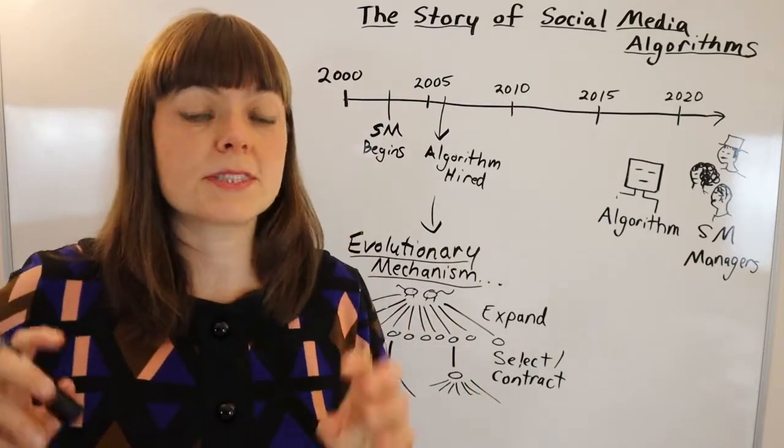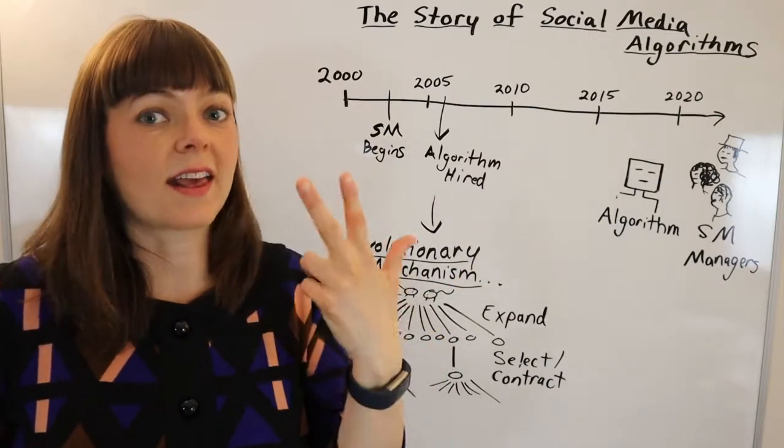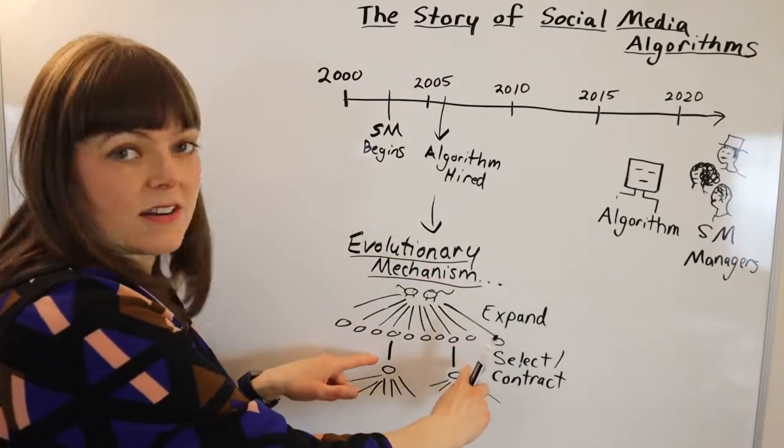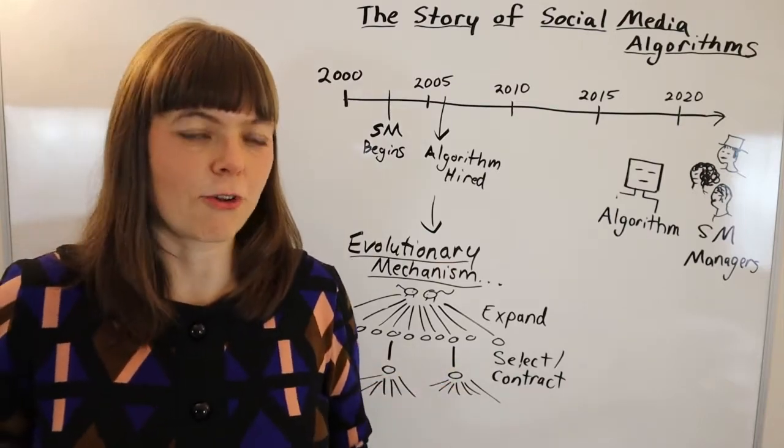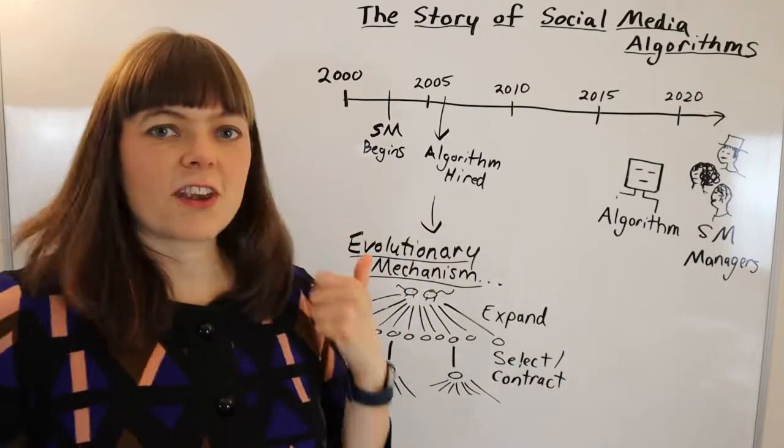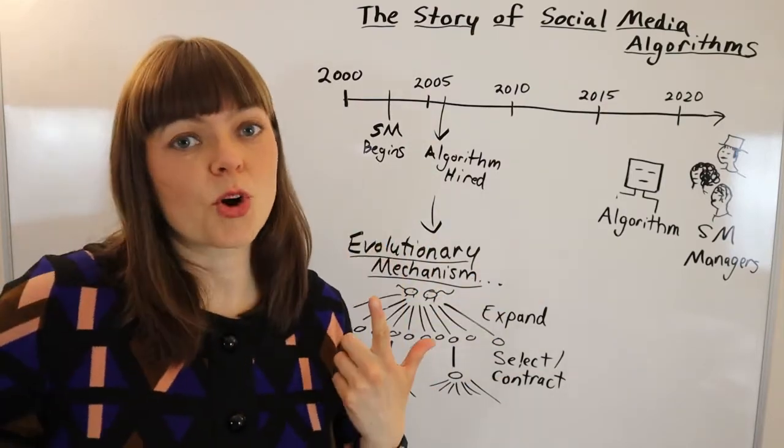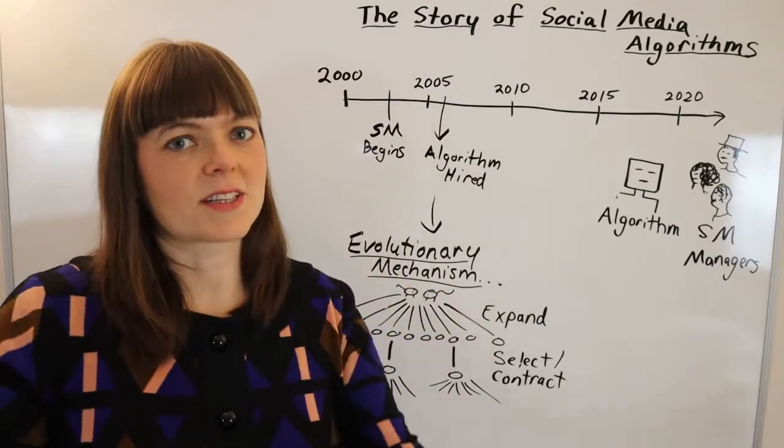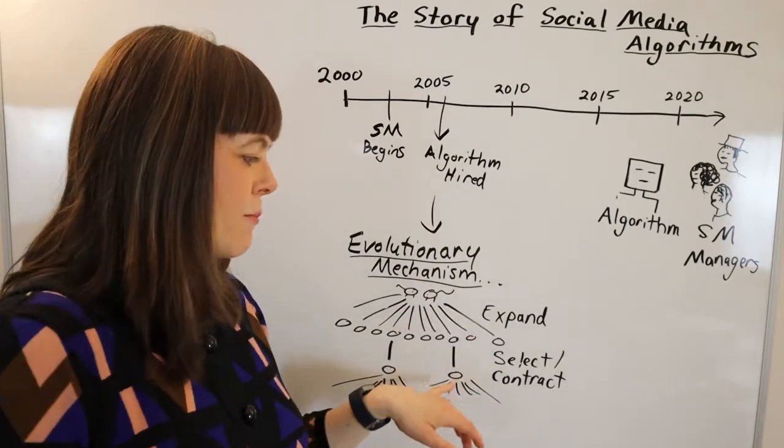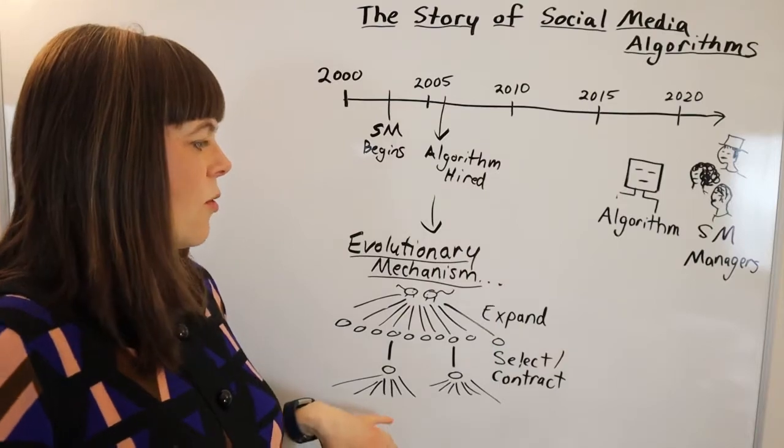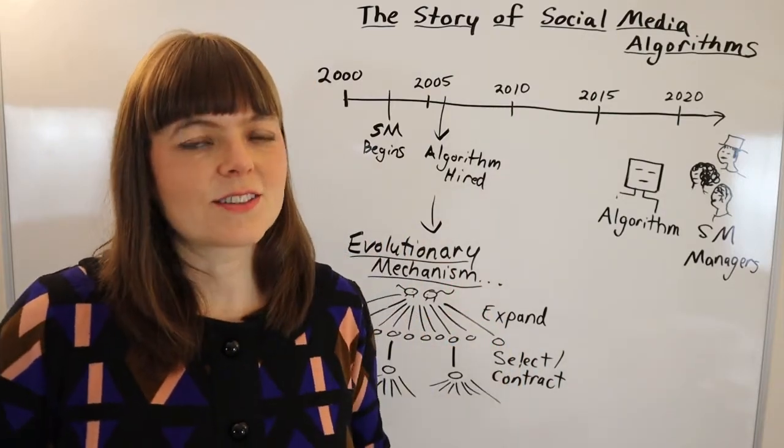So this process repeats over and over, and of course the algorithms are going to present content, figure out which of that content performs the best according to the criteria of keeping people on platform, getting people to click, getting higher prices for people's time on platform. The best content is chosen and then variations in the next generation take into account the criteria that was most successful. The algorithms figured out that colorful content works better than black and white content, content with emotion words works better than non-emotional content, and what kinds of content is clickbait.